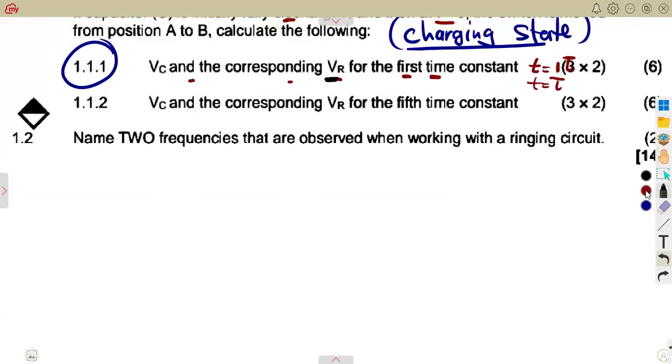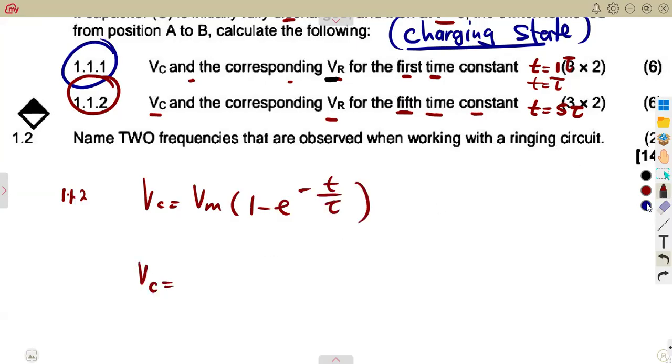On 1.1.2, VC and its corresponding VR for the fifth time constant. Meaning at that condition, time is equal to 5 times the time constant. We are still back to the same formulas. Remember, we are talking of the charging state. VC, we saw that it was given from VM, 1 minus e to the exponent of minus t over τ. The only thing that has changed, remember our VM was 12 volts, the only thing that has changed is this condition of the time.